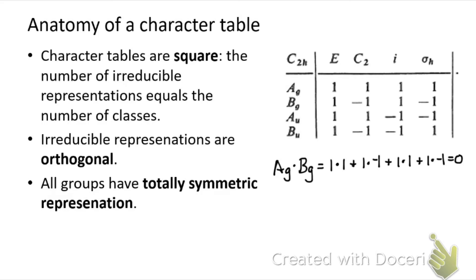You can do that for any combination of two irreducible representations. The irreducible representations are the simplest symbols for the symmetry of an object or rotation in this point group, representing distinct spaces. All groups also have what's called a totally symmetric representation — symmetric with respect to all operations. You find it by looking for the row with all ones. In this point group, the totally symmetric representation is Ag, though its label may differ in other point groups.